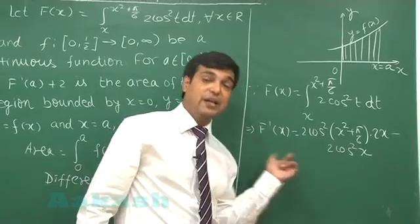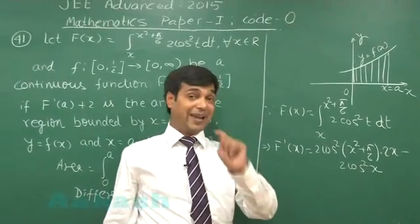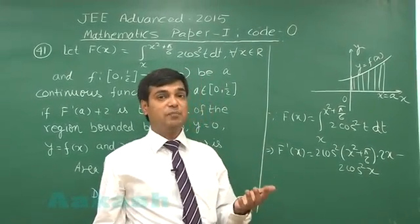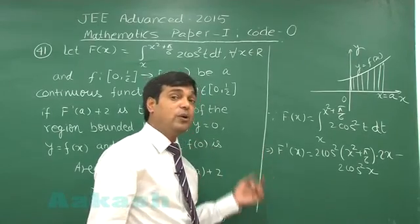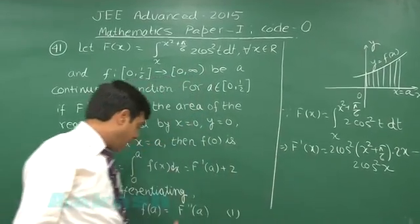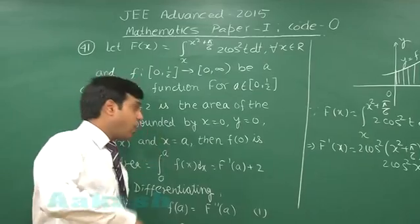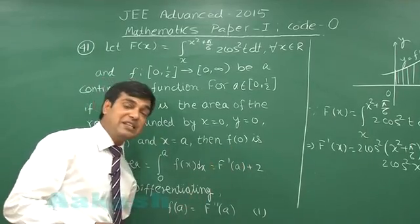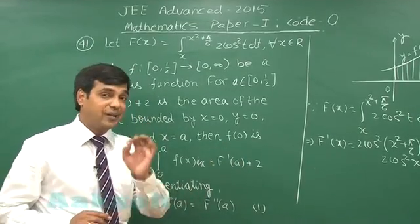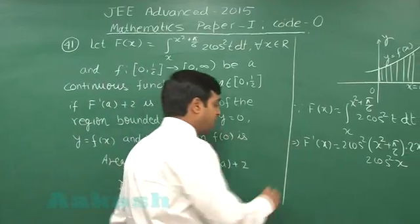This is F'(x). If I differentiate it, I will get F''(x) and then simply we will substitute the value as a in order to get f(a). We require f(0). So we will simply say put a equals 0 to get the final result. So differentiating it again.